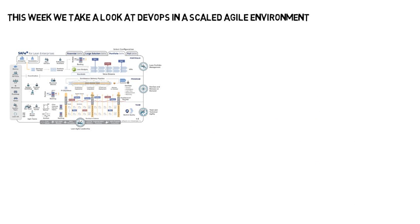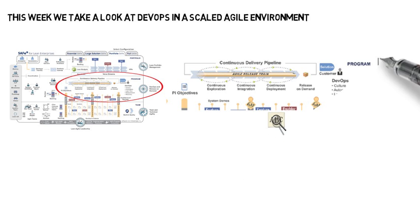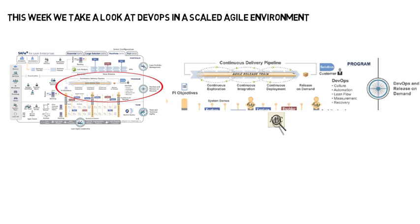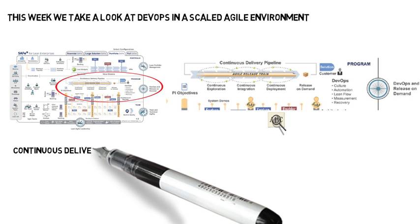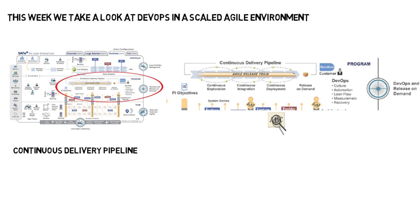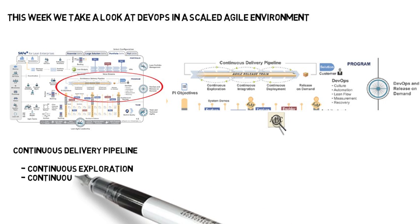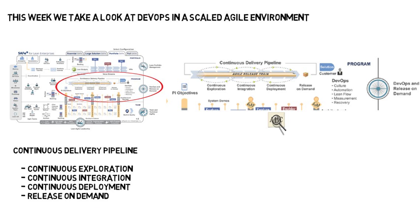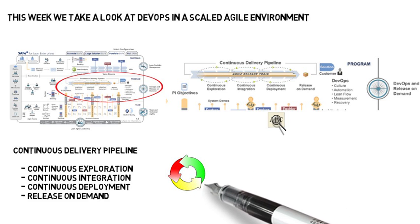Now let's get into the topic today, which is Scaled Agile DevOps. Scaled Agile in its latest version, 4.6, has really made a lot of focus on DevOps and really incorporated that right in. We're zooming in here and we can see the Continuous Delivery Pipeline and their DevOps CALMER approach. The Continuous Delivery Pipeline incorporates all the way through: continuous exploration, continuous integration, continuous deployment, and release on demand — all built right into Scaled Agile at the program level.